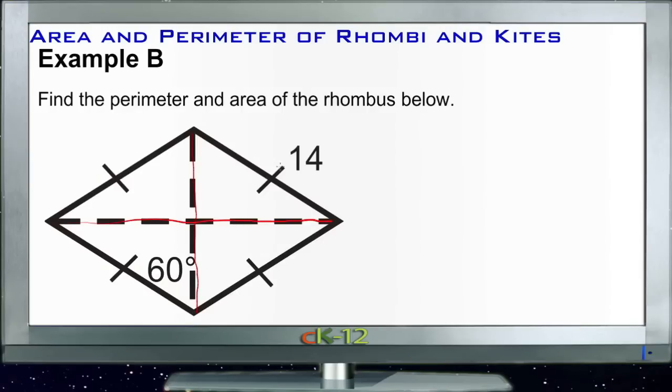In this second example B, the perimeter is easy because we already know that each of our outside links here is 14 units. So our perimeter is just going to be 14 times 4, or 56 units, so that one's really easy. But now finding the area is going to be a little trickier because we need to find these vertical and horizontal diagonals.